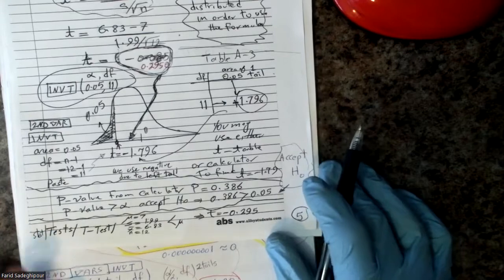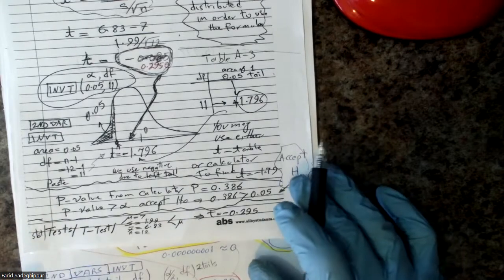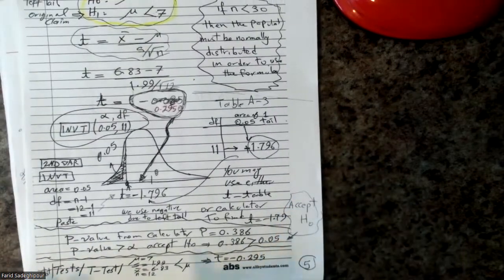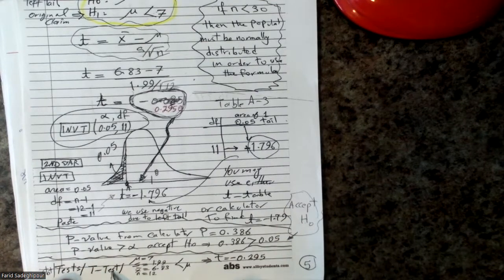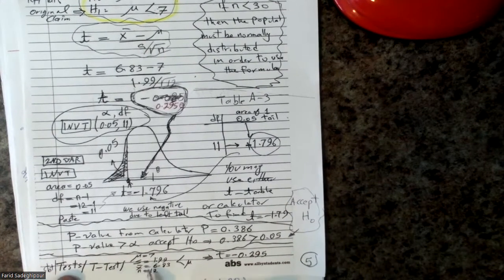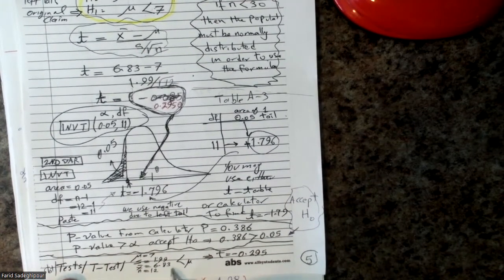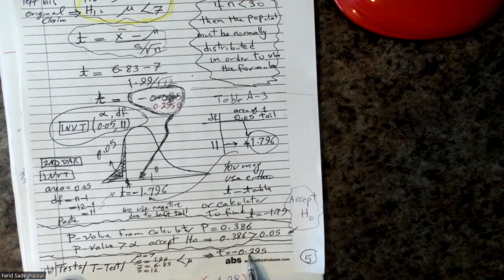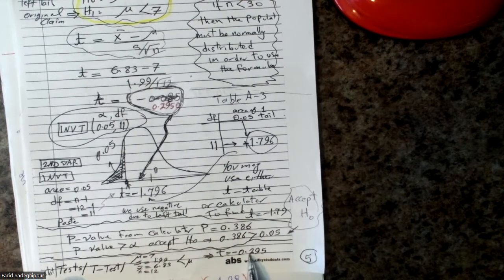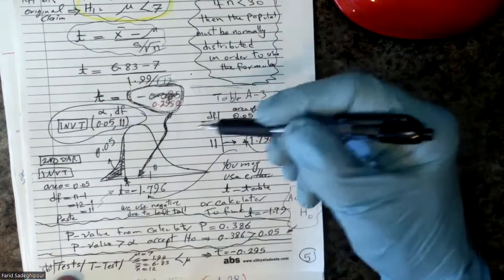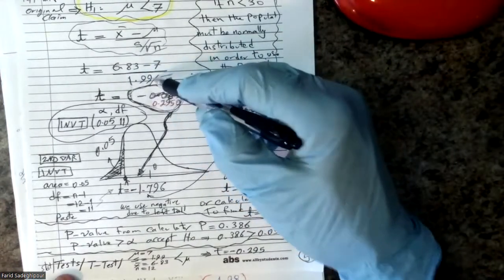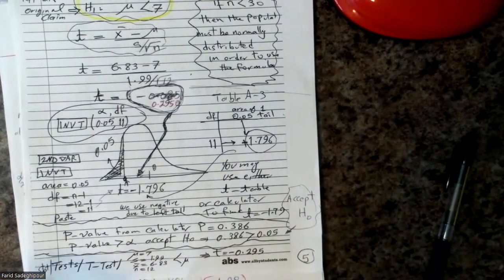If you want to use the calculator, go to Stat, Test, T-Test. Enter mean of population as 7, and input all the other information. The calculator gives you the value of the calculation. So if you don't want to use the formula and prefer the calculator, that's how you do it.